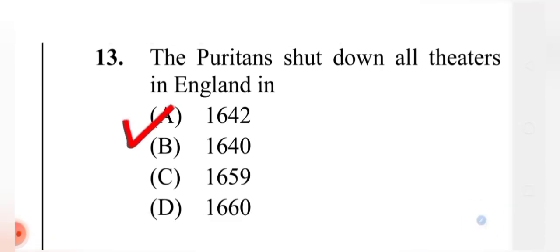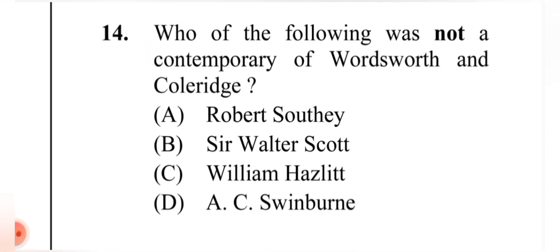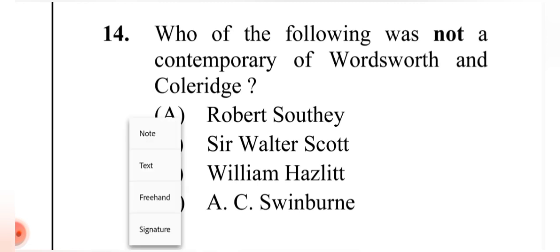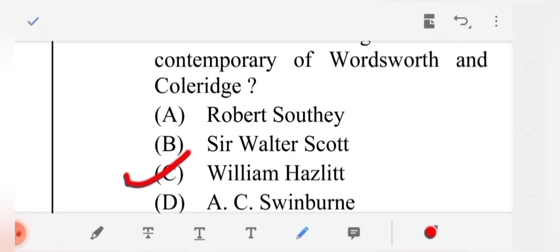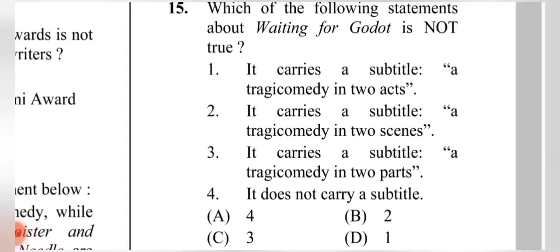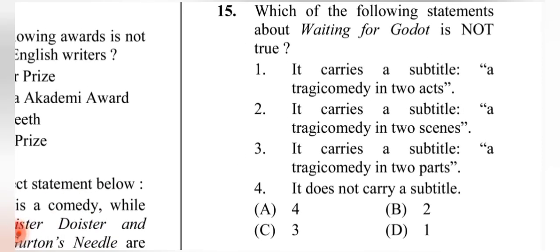Question 14: Who of the following was NOT a contemporary of Wordsworth and Coleridge? The correct answer is (D) William Hazlitt — wait, the speaker says William [someone] lived. Please verify this answer.